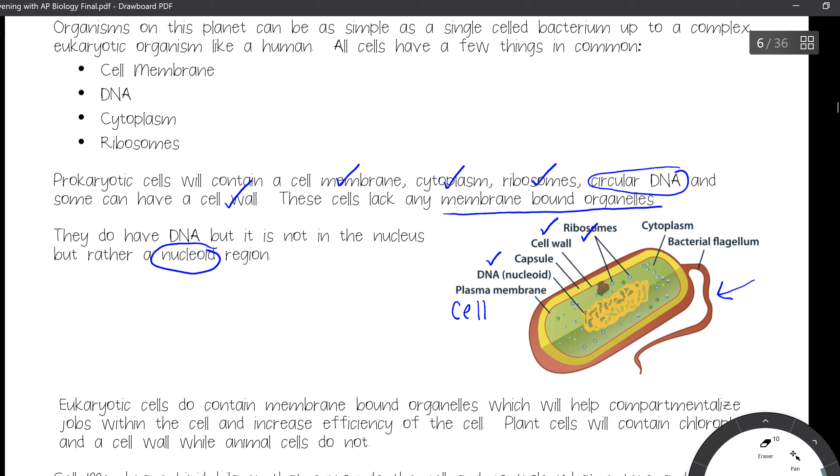Ribosomes, of course, to make proteins, which we're going to talk about very soon, and your cytoplasm. So that would be your basic prokaryotic cell. Notice no membrane-bound organelles. Ribosomes are not membrane-bound organelles.